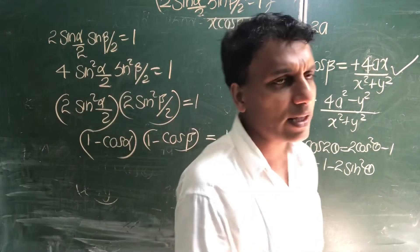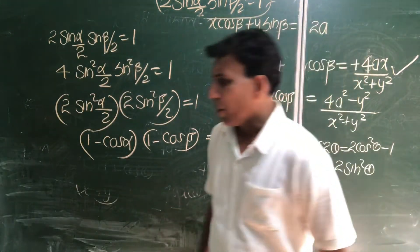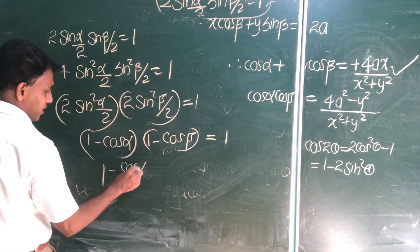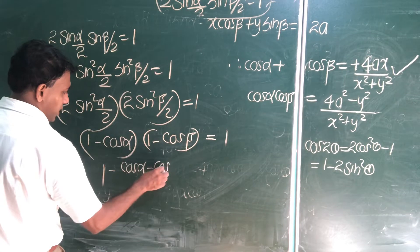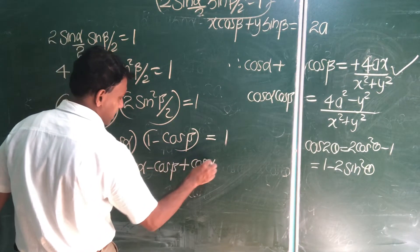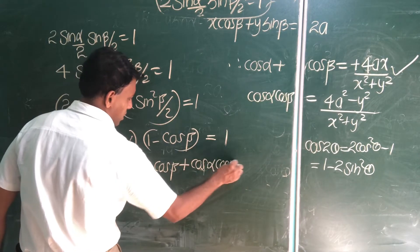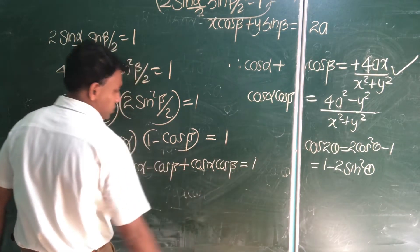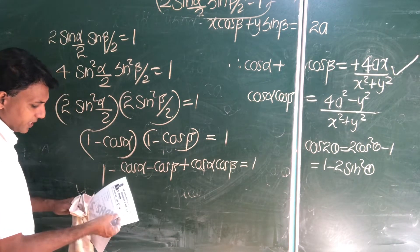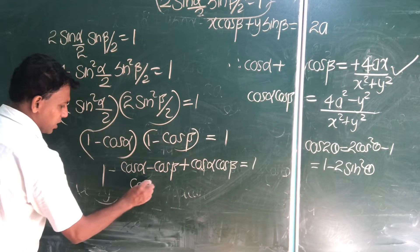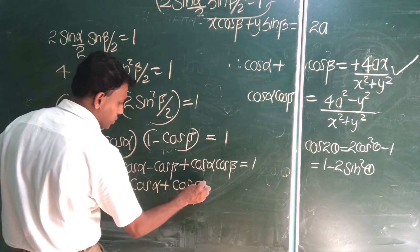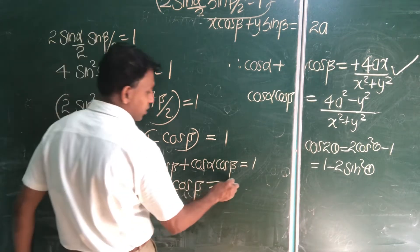Now multiply the bracket and give the answer. Multiple the bracket, 1 into 1, 1 minus cos alpha minus cos beta plus cos alpha cos beta equal to 1. So, 1, 1 cancel. Go to your second part answer.